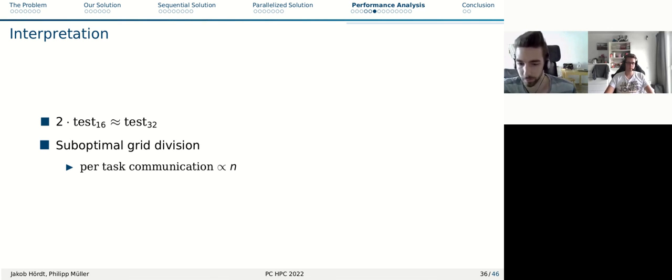A possible reason for this, which we suspect, is that we chose suboptimal grid division. As Philip already explained, we divided column-wise. And if we had divided in a grid-wise fashion, then the per-task communication wouldn't rise. In our case, because we divided column-wise, our per-task communication is proportional to N, which is the width of the grid.